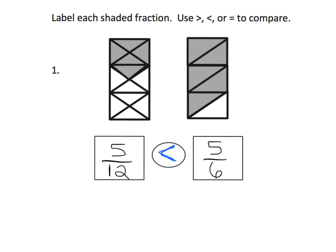The way we say this is: 5 twelfths is less than 5 sixths. Some students think of the less-than symbol as looking like an L. Another way to remember: the small side points to the smaller number and the big side opens toward the bigger number. So 5 twelfths is smaller than 5 sixths.